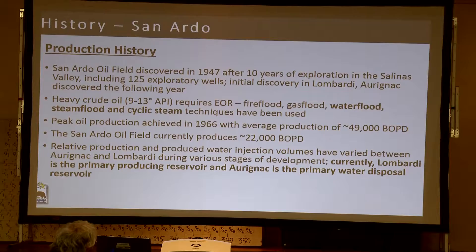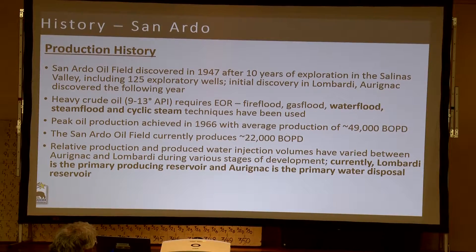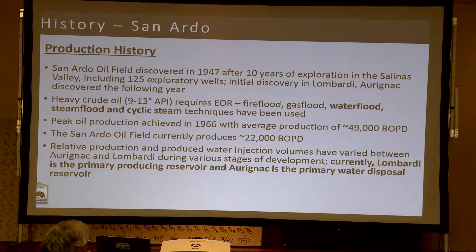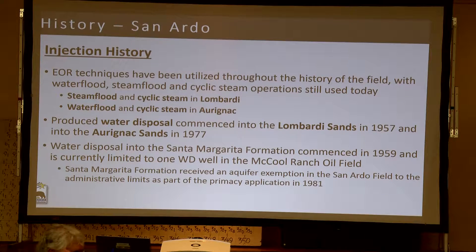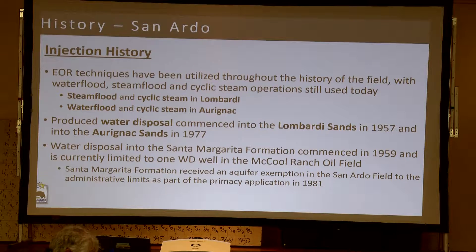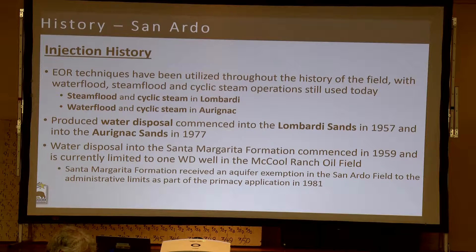2015 data indicates production is about 22,000 barrels of oil per day. The amount of oil extracted from the Lombardia and the Aranac has varied over time. Currently, the Lombardia is the main producing zone, and the Aranac is the main water disposal zone. In the Lombardia, the main techniques used currently are steam flood and cyclic steam. In the Aranac, cyclic steam is the primary enhanced oil recovery technique, and water disposal occurs there as well.